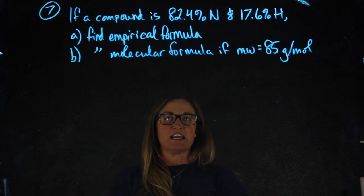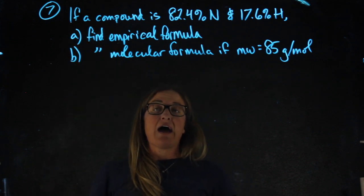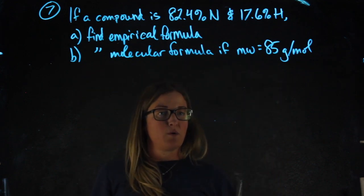Number seven, if a compound is 82.4% nitrogen and 17.6% hydrogen, we're going to find the empirical formula. After finding the empirical formula, we're going to find the molecular formula knowing the molecular weight.